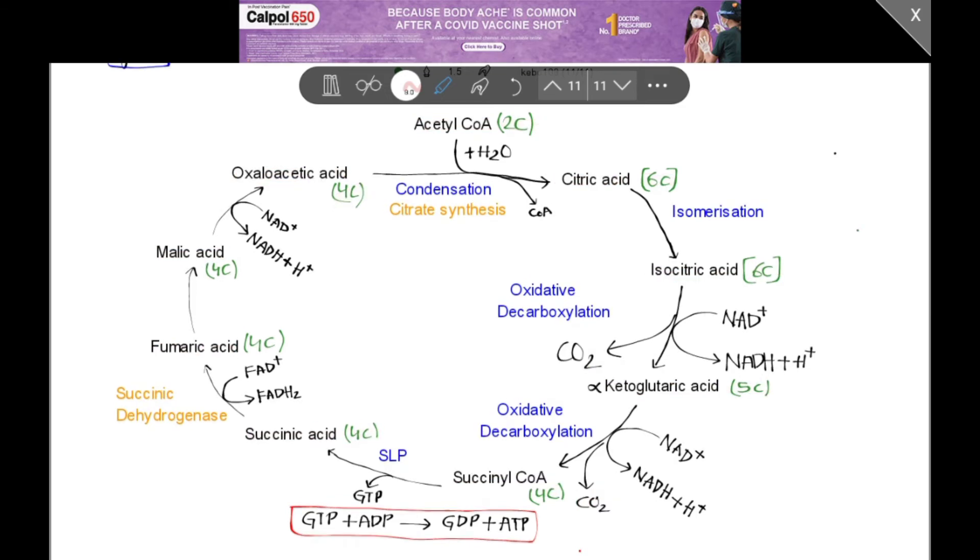Now, coming to few important points of Krebs cycle. There are 2 points where oxidative decarboxylation occurs. From isocitric acid to alpha-ketoglutaric acid. From alpha-ketoglutaric acid to succinyl coenzyme A. Second, there are 2 points where carbon dioxide is involved. One is here and one is here.